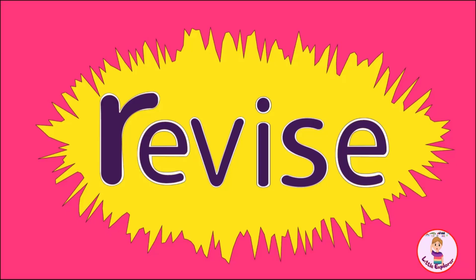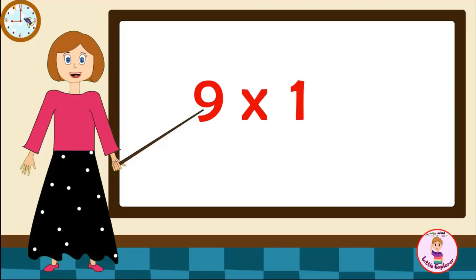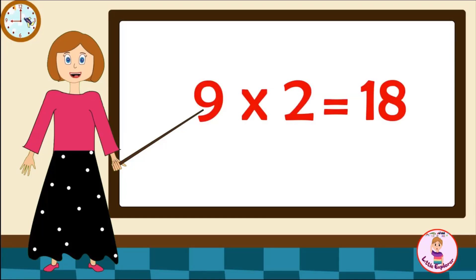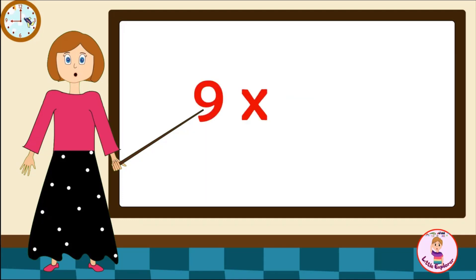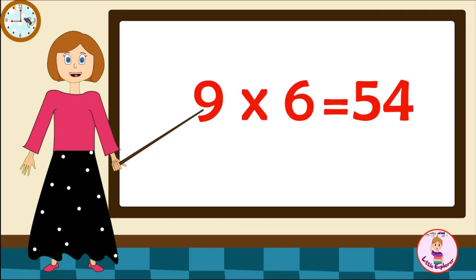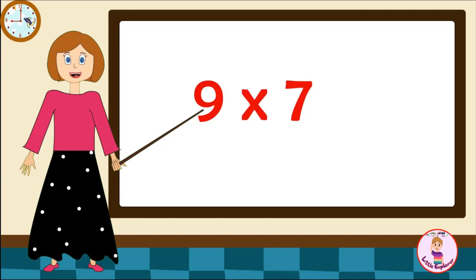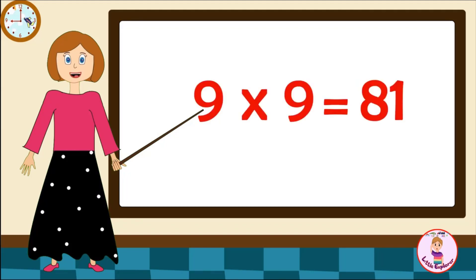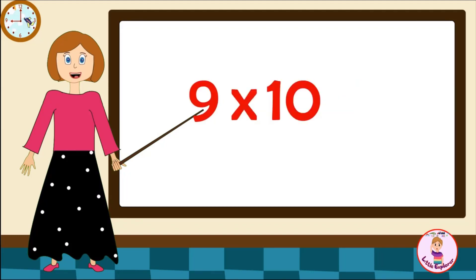Let's revise it one more time. Come on! Nine-one's are nine. Nine-two's are eighteen. Nine-three's are twenty-seven. Nine-four's are thirty-six. Nine-five's are forty-five. Nine-six's are fifty-four. Nine-seven's are sixty-three. Nine-eight's are seventy-two. Nine-nine's are eighty-one. Nine-ten's are ninety.